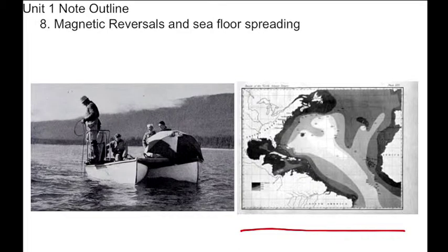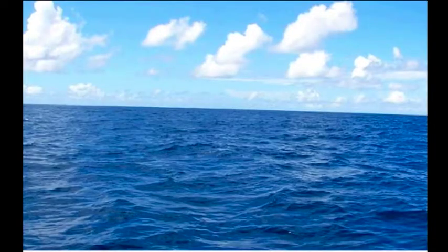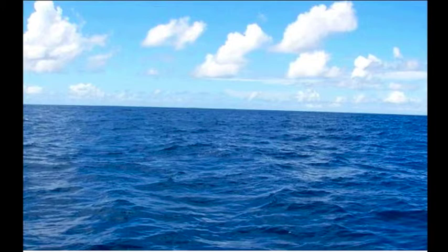The first printed map of oceanic bathymetry was produced from 1836. This is the kind of technology that was being utilized during Alfred Wegener's time. Granted, Wegener lived in the early 1900s, but this technology was still how we were getting images of the ocean floor during his time.